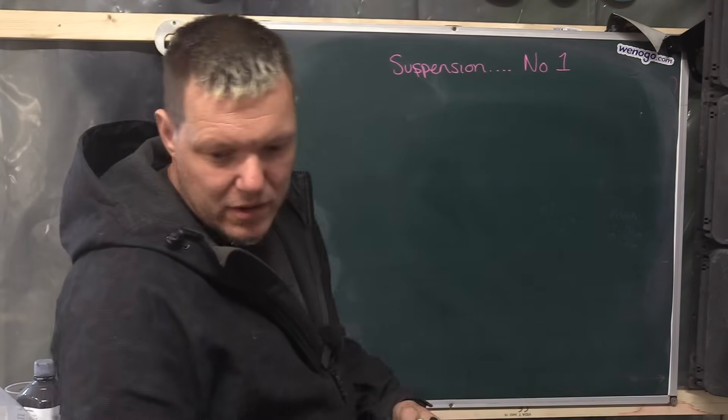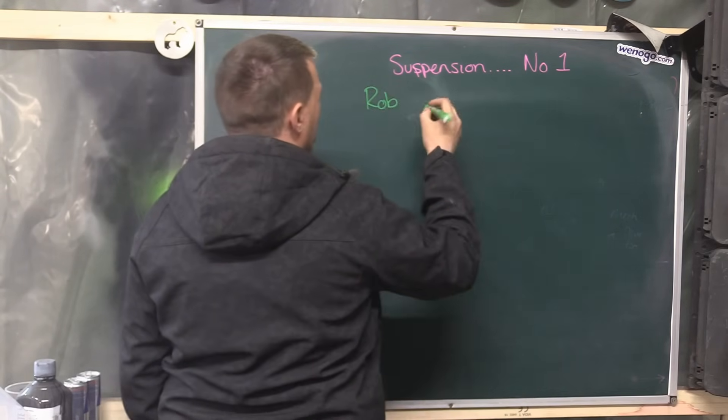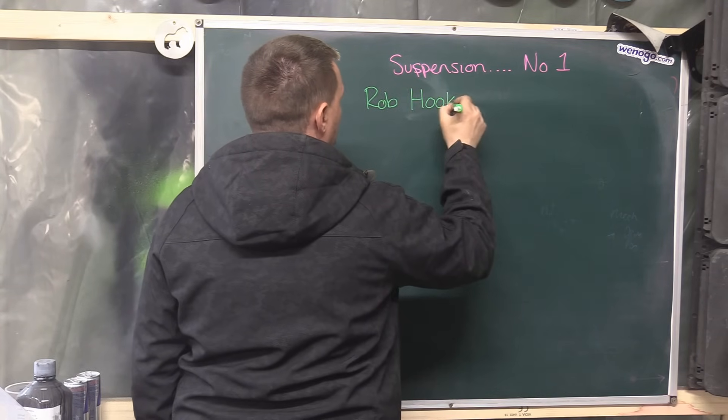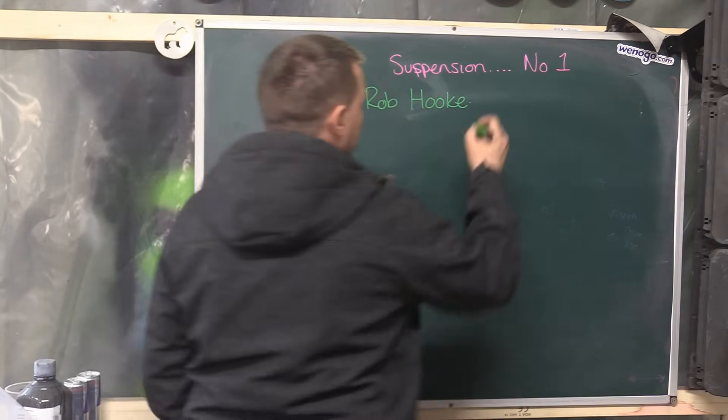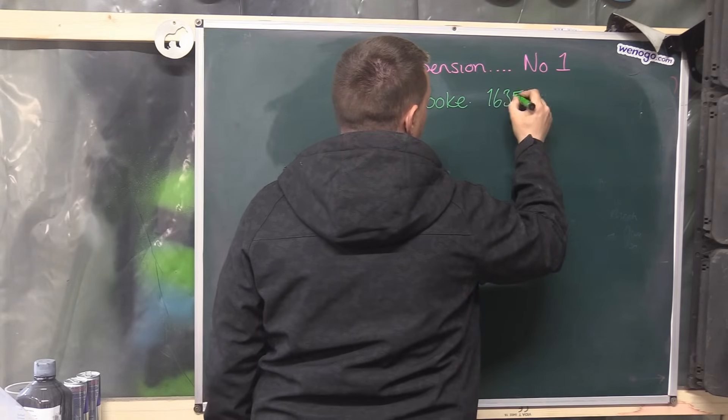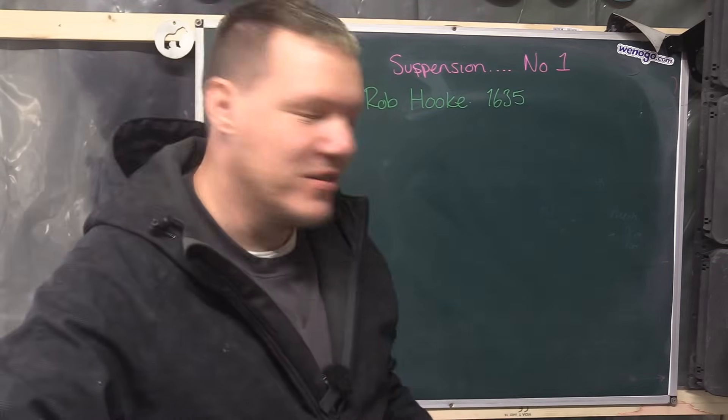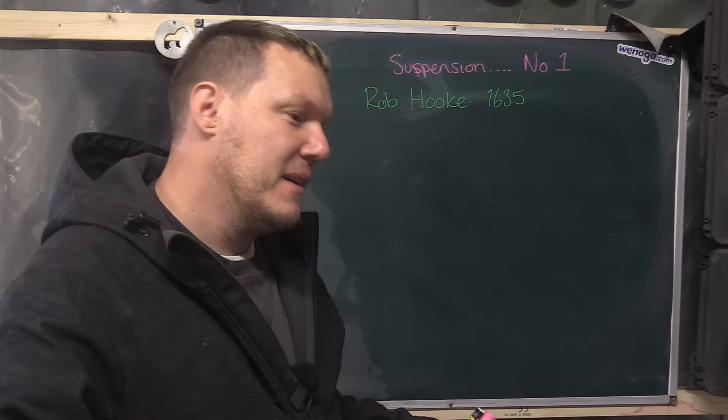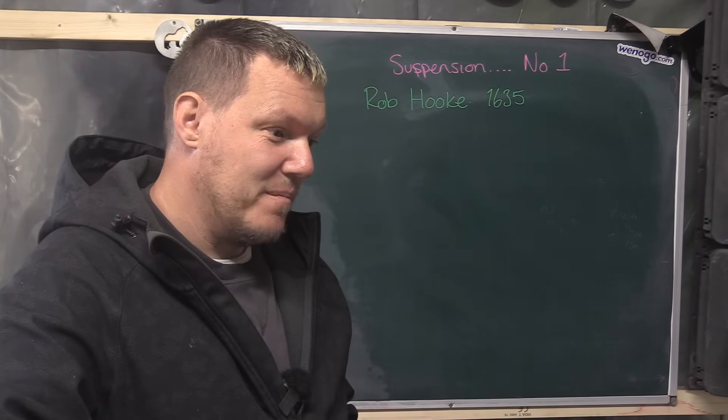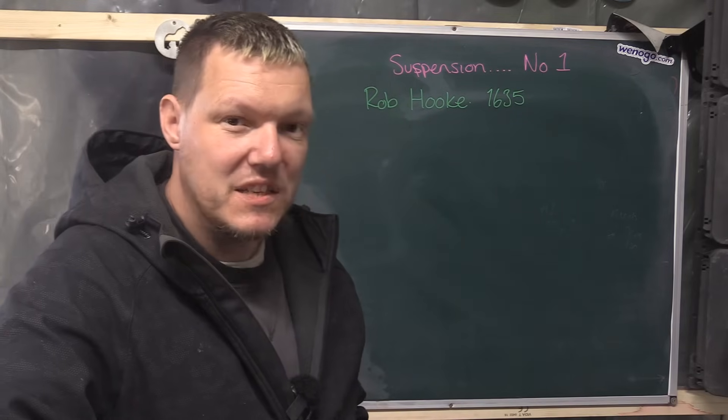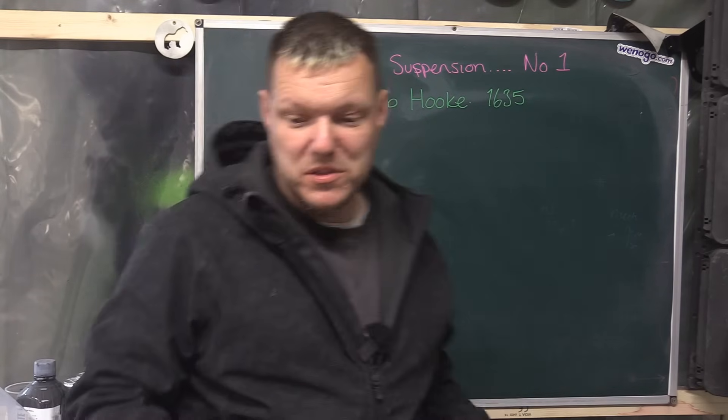So there was a guy, I've got it written down here because I can't remember the dates. Robert Hooke, born in 1635, and by all accounts he was a bit of a problem. People called him distasteful, impatient, snide - people called him all sorts of things.